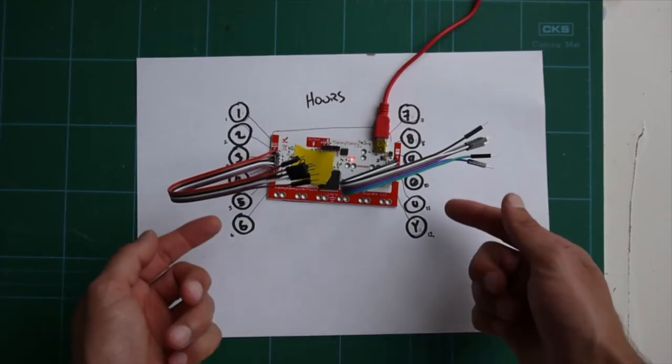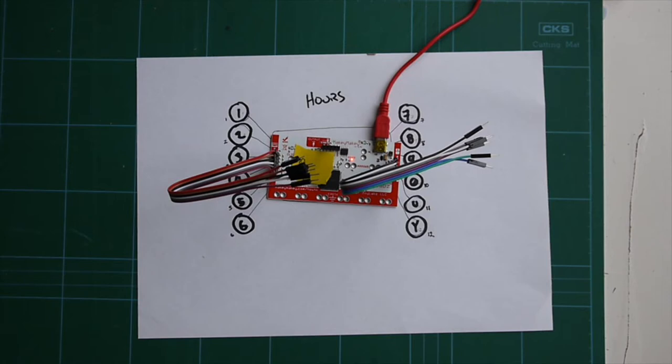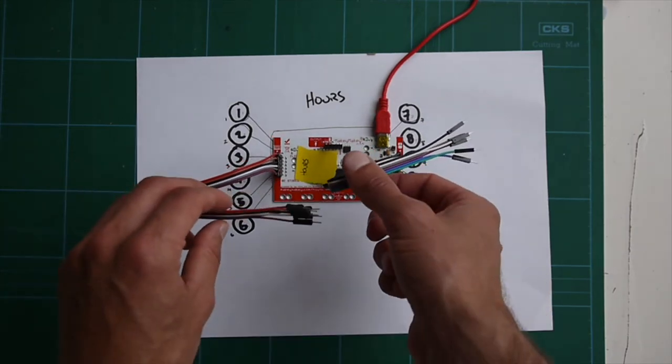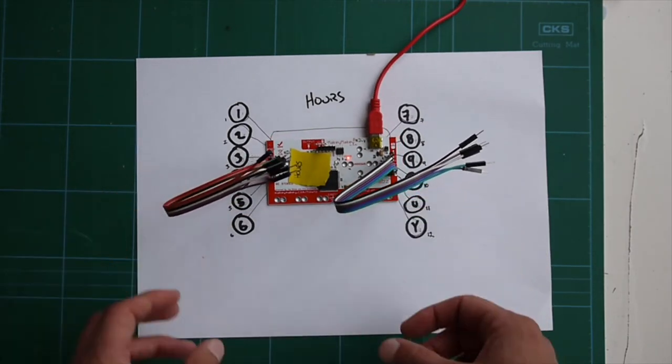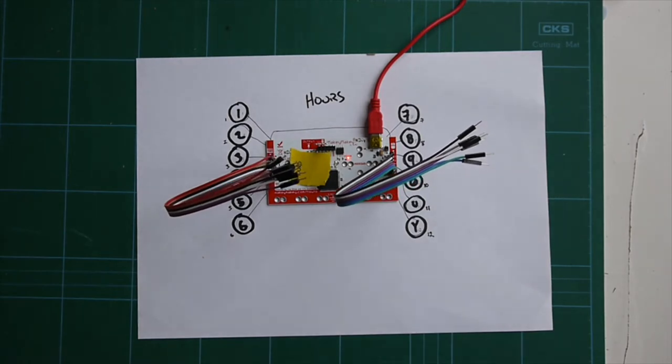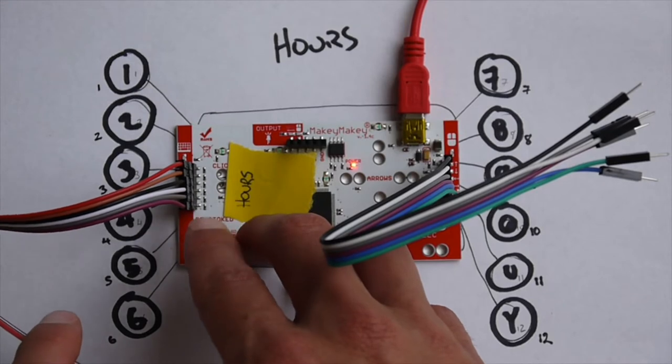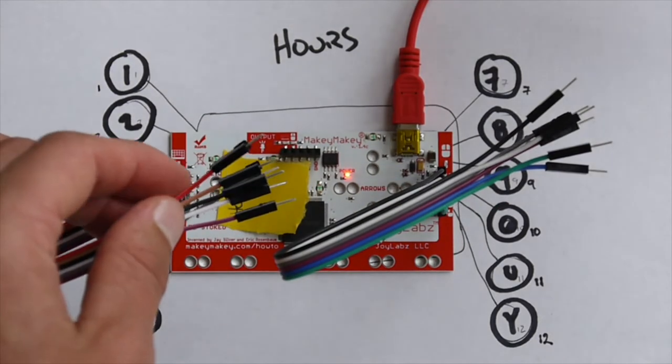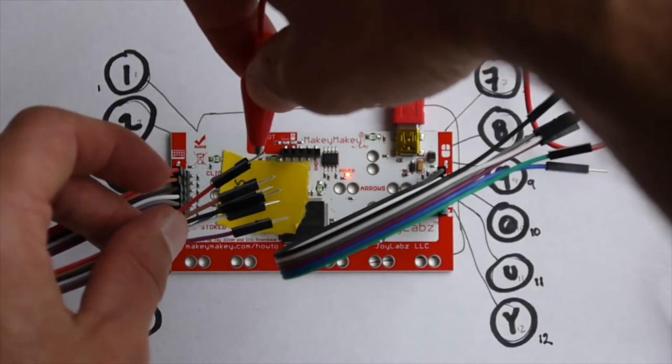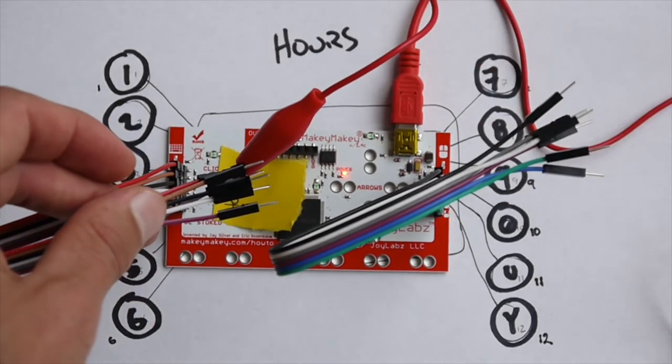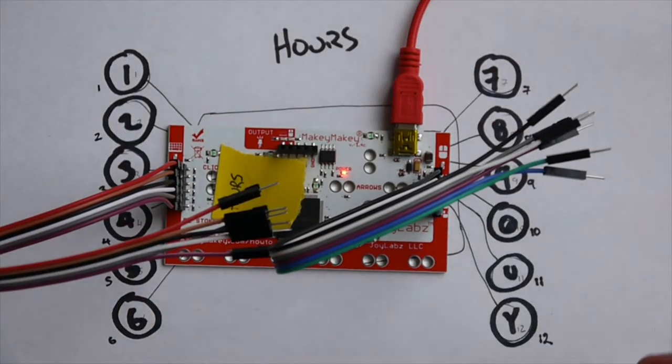Alright, I've got the Makey Makey down here and I've remapped all the keys on the back. If you're not sure what I'm talking about, go check the card in the top right corner. You'll also see some cables coming out from the back of the Makey Makey. I'm just going to zoom in to give you a better look. These cables connect to the key presses on the back and we will connect the alligator cables to the jumper cables that are attached to the clock. That's how we're going to hook up all the buttons.